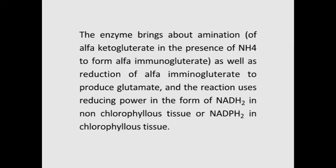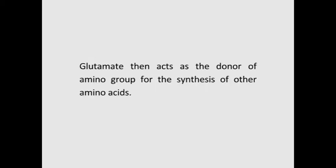In the reductive amination pathway, alpha-ketoglutarate acts as an acceptor to synthesize glutamate, catalyzed by the enzyme glutamate dehydrogenase. The enzyme catalyzes amination of alpha-ketoglutarate in the presence of ammonium to form alpha-iminoglutarate, and its reduction to produce glutamate. The reaction uses reducing power in the form of NADH2 in non-chlorophyllous tissue or NADPH2 in chlorophyllous tissue. Glutamate then acts as the donor of amino group for synthesis of other amino acids.